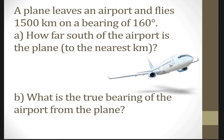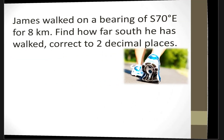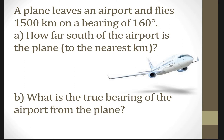First of all, we have to draw the diagram. 160 degrees is almost 180 degrees, so it's going down south. Draw the reference point first. This is north. From north, you start at 160 degrees — remember, bearing starts from north — and go clockwise roughly. So from here to here is 160 degrees.